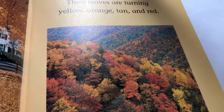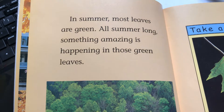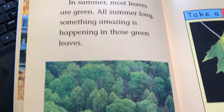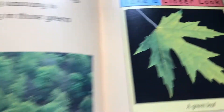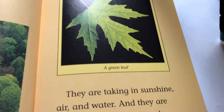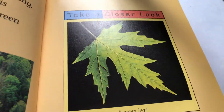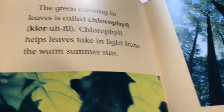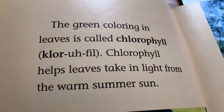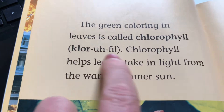Their leaves are turning yellow, orange, tan, and red. In summer most leaves are green, but all summer long something amazing is happening in those leaves — this is super cool. Take a closer look: they are taking in sunshine, air, and water and they're making food. That leaf is the food source, the power source, for that tree.